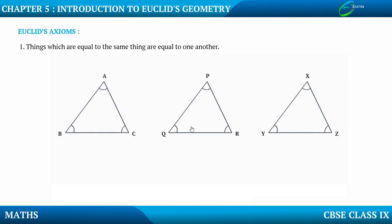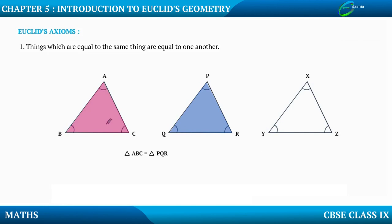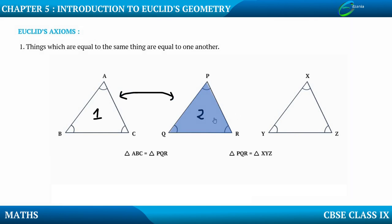Let us consider three triangles: Triangle ABC, Triangle PQR, and Triangle XYZ. Triangle ABC is equal to Triangle PQR — that is Triangle 1 is equal to Triangle 2. And Triangle 2 is equal to Triangle 3, that is Triangle XYZ.